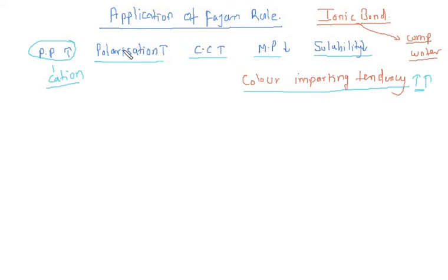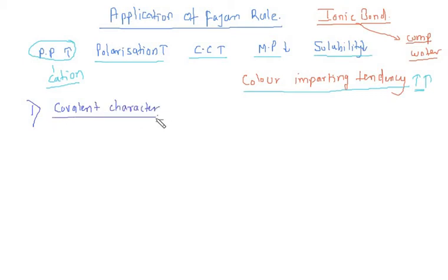We will now study all of these one by one. First, I'll discuss covalent character. I'll take examples so you understand in a better way. Let's have the first example: BeCl₂, MgCl₂, CaCl₂, SrCl₂, and BaCl₂.